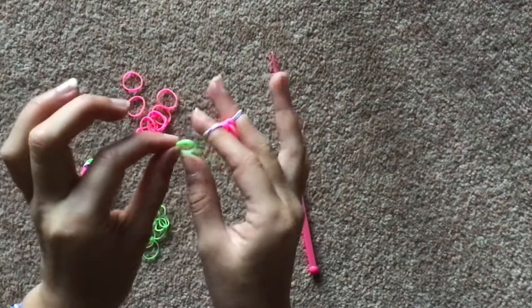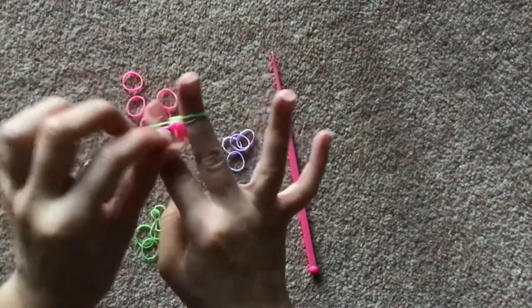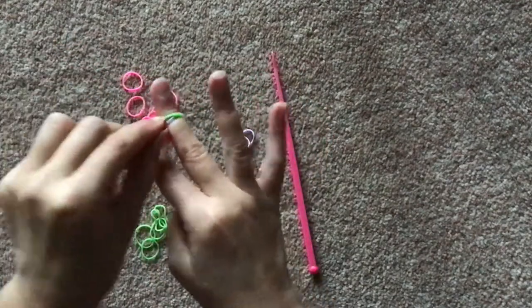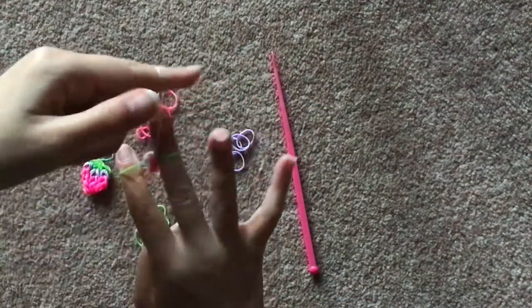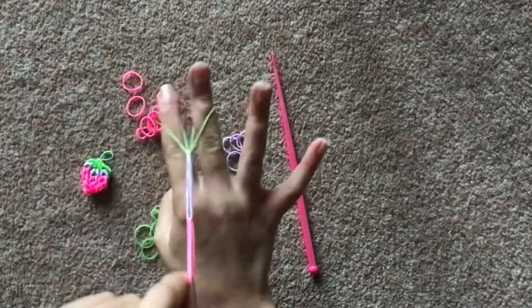Now we're going to get two green ones and do the exact same thing. Just put it over, then get the bottom lilac and put that over on the left side and same with the right and pull it down.